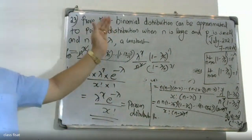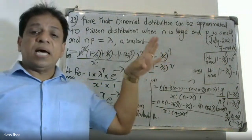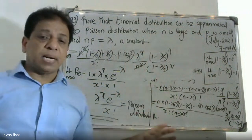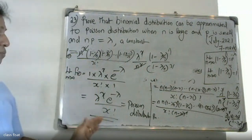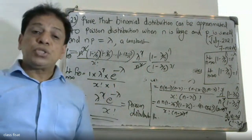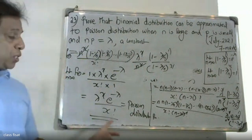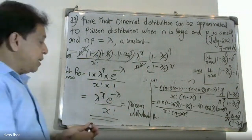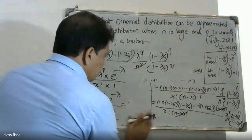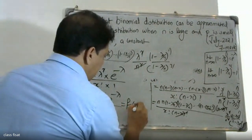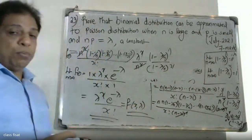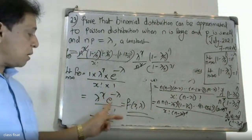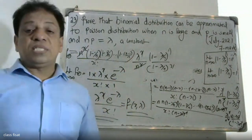If we summarize, the Poisson distribution probability mass function is f of x equals lambda raise to x times e raise to minus lambda divided by x factorial, where lambda is the parameter. This is the proof we have done.